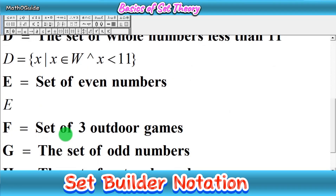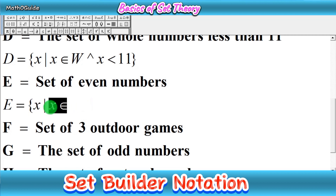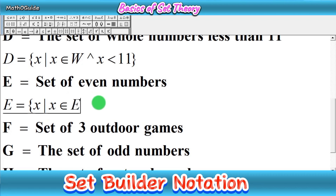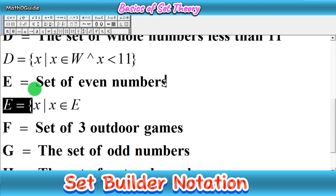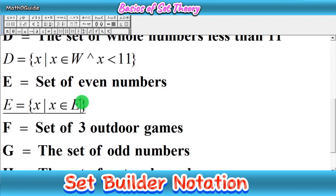Next we have set E, which is equal to the set of even numbers. Same procedure: X such that X belongs to the set of even numbers, noted by capital E. After that, there is no limit here, so simply close with a curly bracket. We have no range, so just close it.